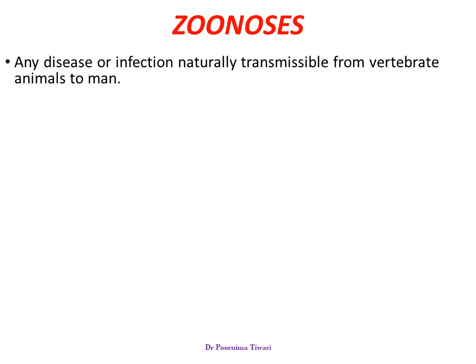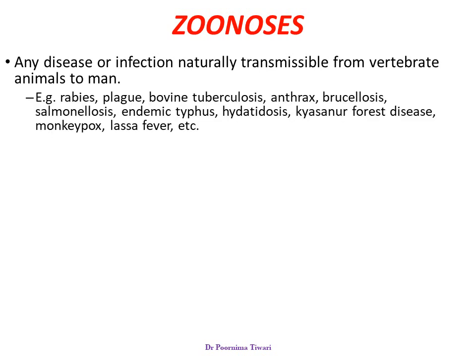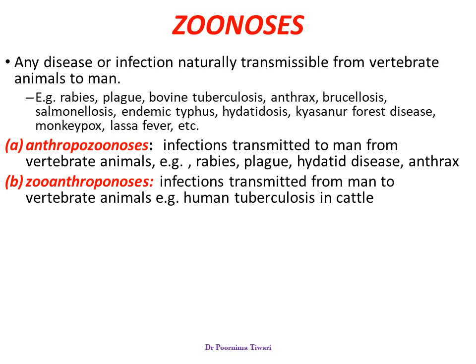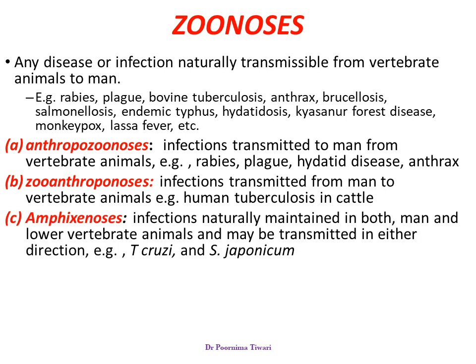Zoonoses — note the 'es' which means plural, more than one disease; zoonosis with an 'is' refers to a single zoonotic disease. Zoonosis is a disease which can be naturally transmitted from vertebrate animals to man. Examples include rabies, plague, bovine tuberculosis, and anthrax. Anthropozoonosis are infections transmitted to man from vertebrate animals — examples include rabies, plague, hydatid disease, and anthrax. Zooanthropozoonosis are infections which man can transfer to vertebrate animals; for example, cattle handlers who have tuberculosis can transmit human tuberculosis to cattle. Amphizoonosis are infections naturally maintained in both human and lower vertebrate animal populations and can be transmitted in either direction — for example, Trypanosoma cruzi. An exotic disease is a disease not known to occur in a country but is imported from outside.